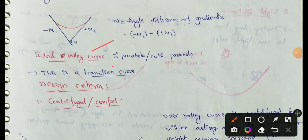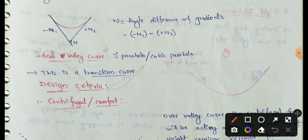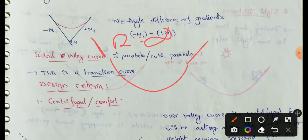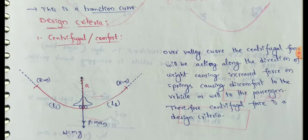The ideal valley curve is a cubic parabola shape. These are transition curves. The two edges will provide a transition from a radius of infinity down to radius R at the center. The radius then transitions from infinity back to infinity, forming a symmetrical curve.